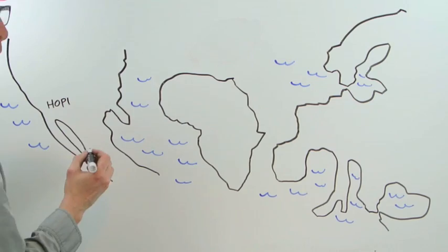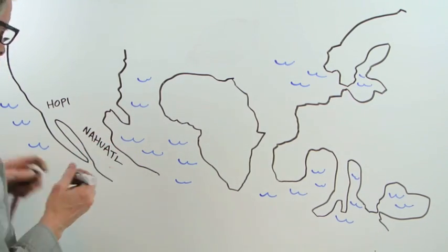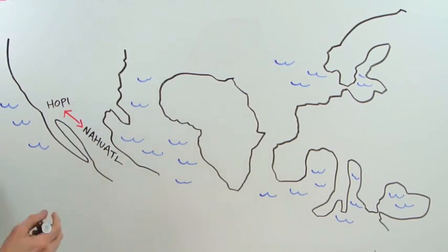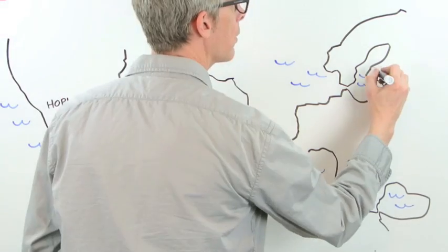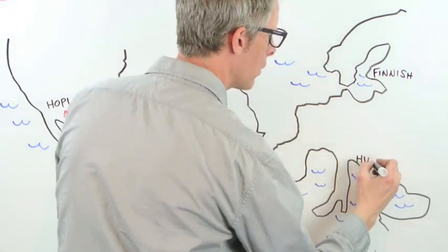We can show how geographically distant languages are related to each other in families like Uto-Aztecan in the Americas, Bantu in Africa, or Uralic, which spans from Europe to Asia and Siberia.